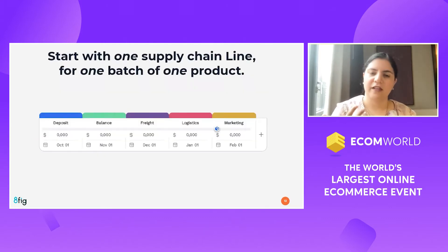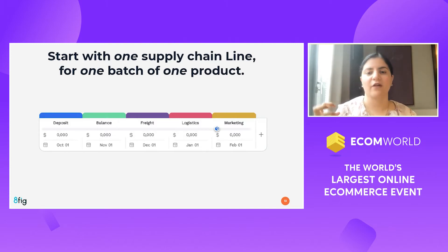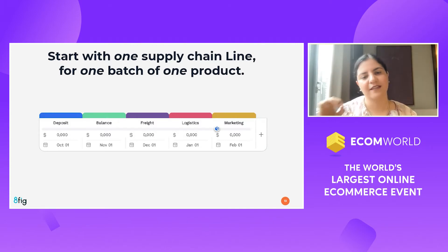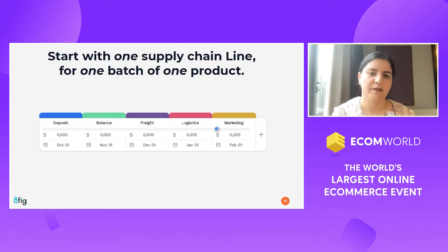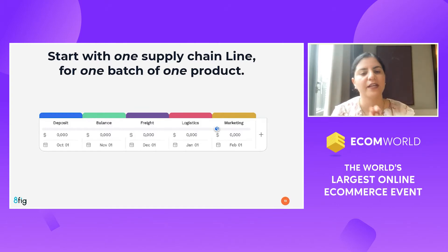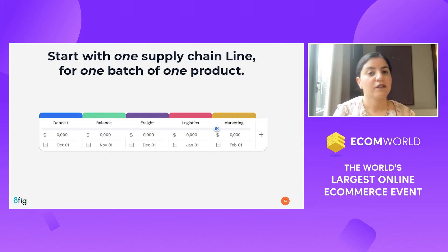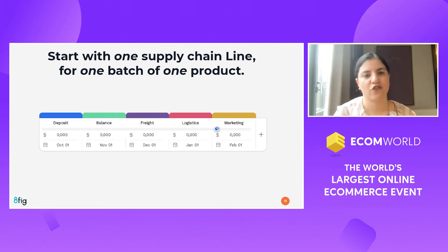We want all eight-figure sellers in the making, just like you, to create a free account on 8fig.co and start mapping out every anticipated expense in your supply chain, from the cost of manufacturing to the cost of freight and marketing. Start by doing this for one product, one batch, one month.